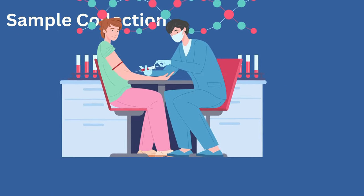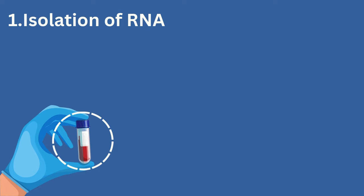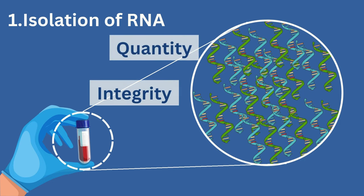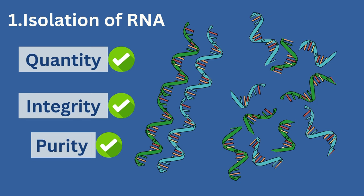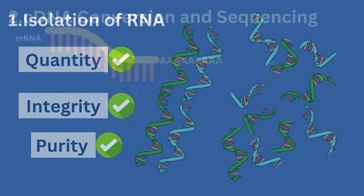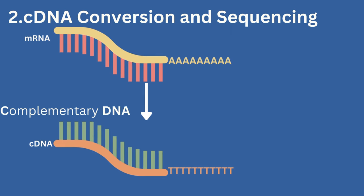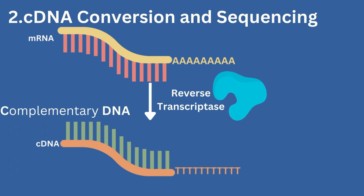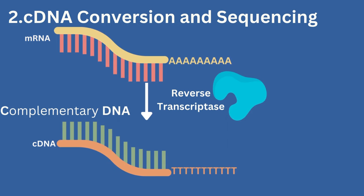Once a sample is collected from the patient, it is quickly sent off to the lab for RNA sequencing. The RNA sequencing process begins by isolating RNA from the sample. At this point, there will be a quality assurance step to ensure the quantity, integrity, and purity of the isolated RNA. If the RNA isolation passes these tests, it will be broken up, or fragmented, prior to the next step, which is the conversion of the fragmented RNA to complementary DNA, or cDNA, with an enzyme called reverse transcriptase. This cDNA mimics the chemistry of a DNA strand for sequencing purposes, but also contains all of the post-transcriptional modifications of the RNA, representing functional proteins.